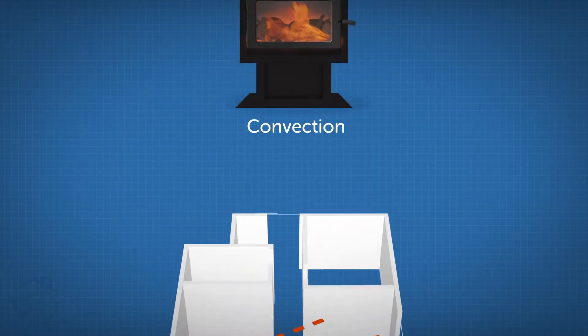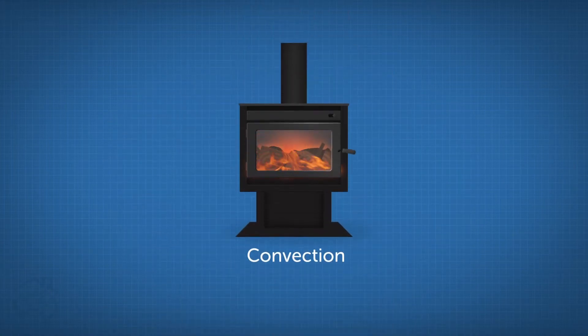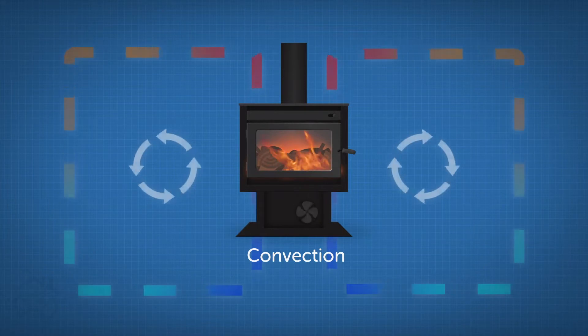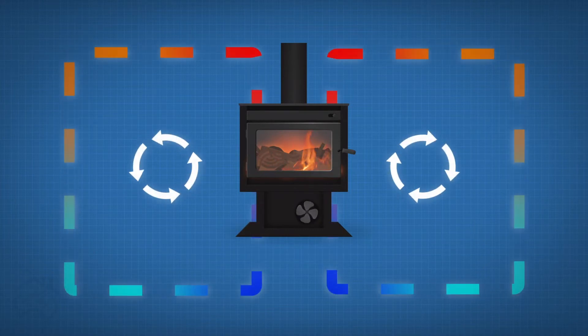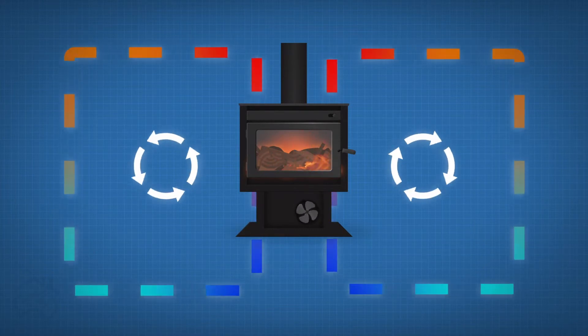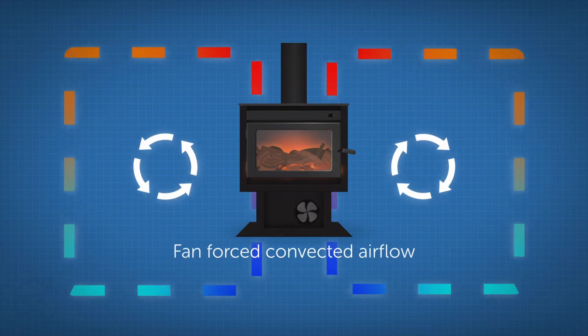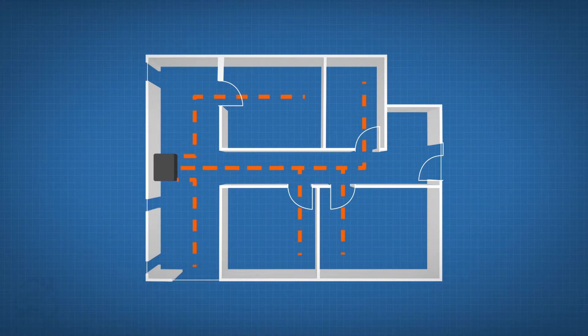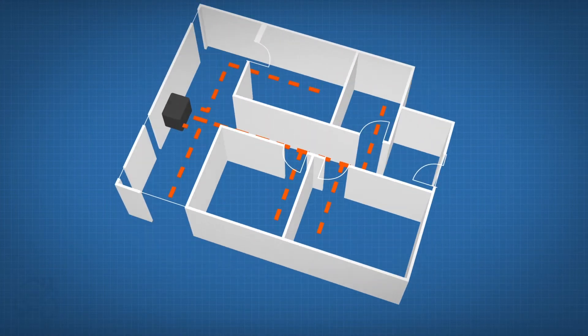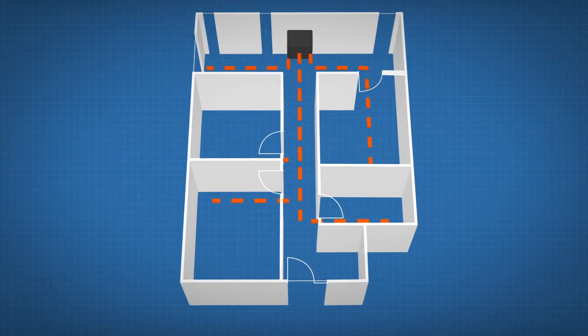A convection heater heats up the air in and around the unit and circulates it around the house by fan-forced convected airflow. Convection heaters are best for moving warm air up hallways and into other rooms.